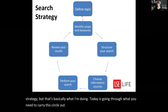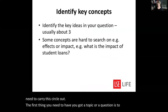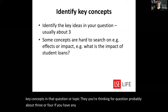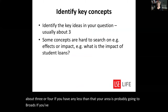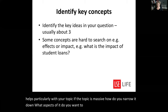The first thing you need to do if you've got a topic or a question is to identify the key concepts in that question or topic. Normally you're thinking about three or four concepts for a question. If you have fewer than that, your area is probably going to be too broad; if you've got over four or five, it's probably going to be too specific. This helps particularly if your topic is massive — how do you narrow it down, what aspects of it do you want to look at?